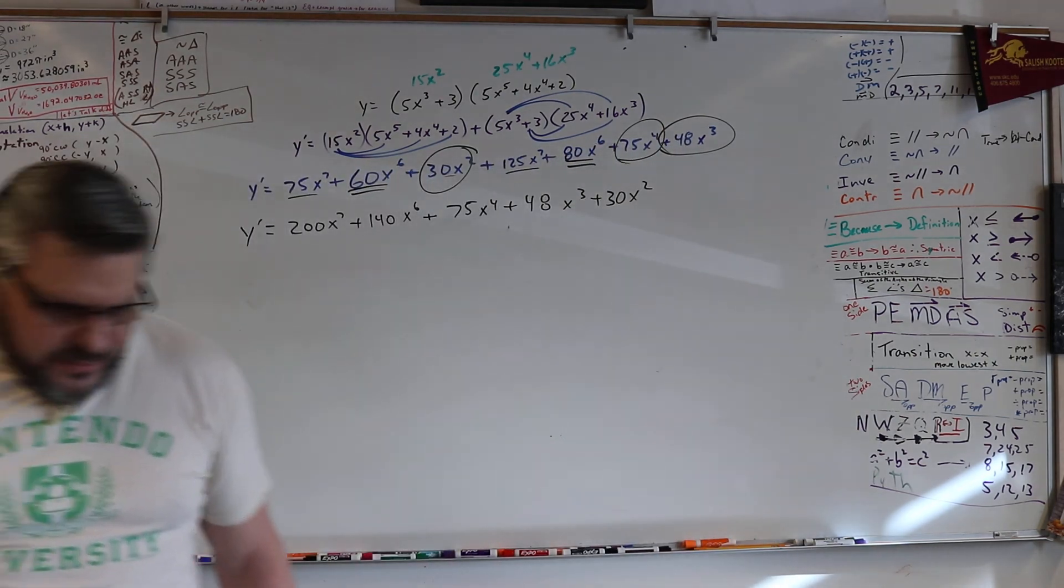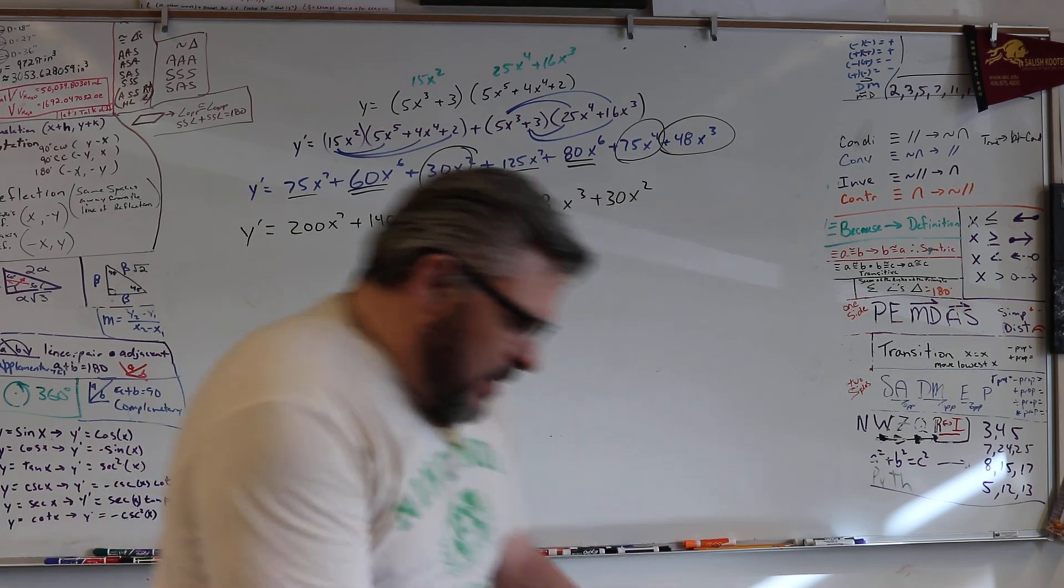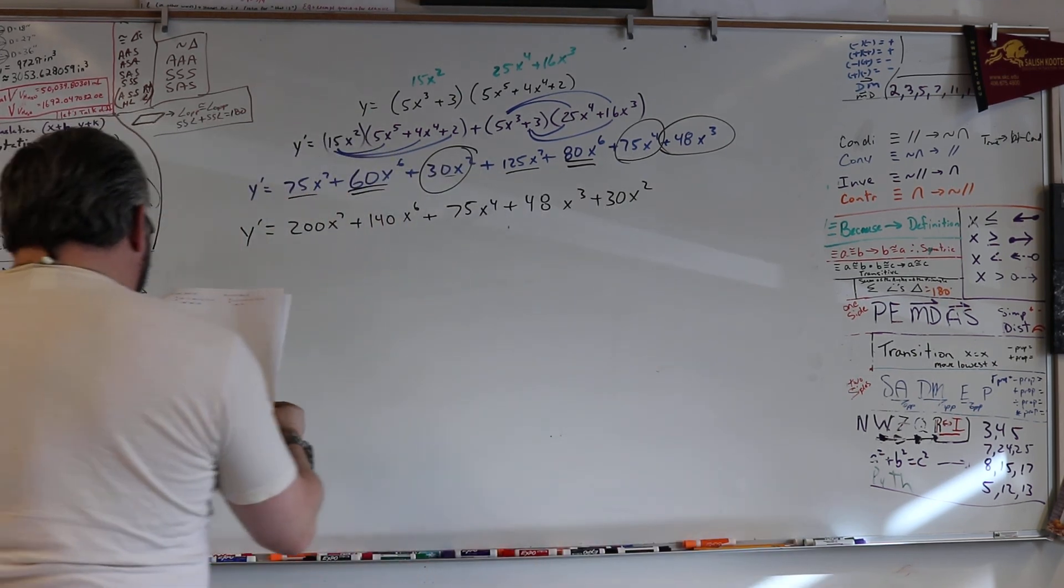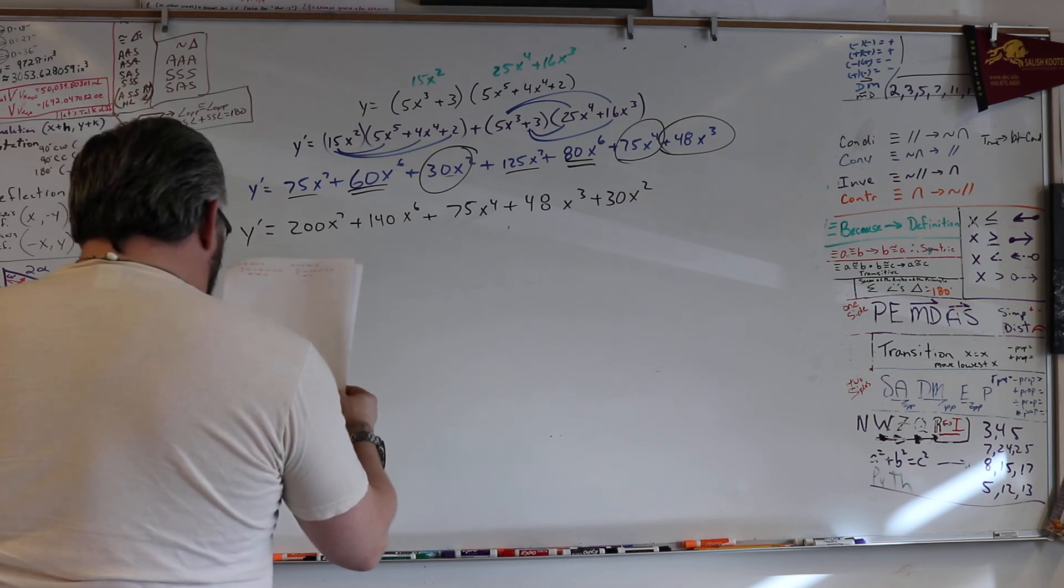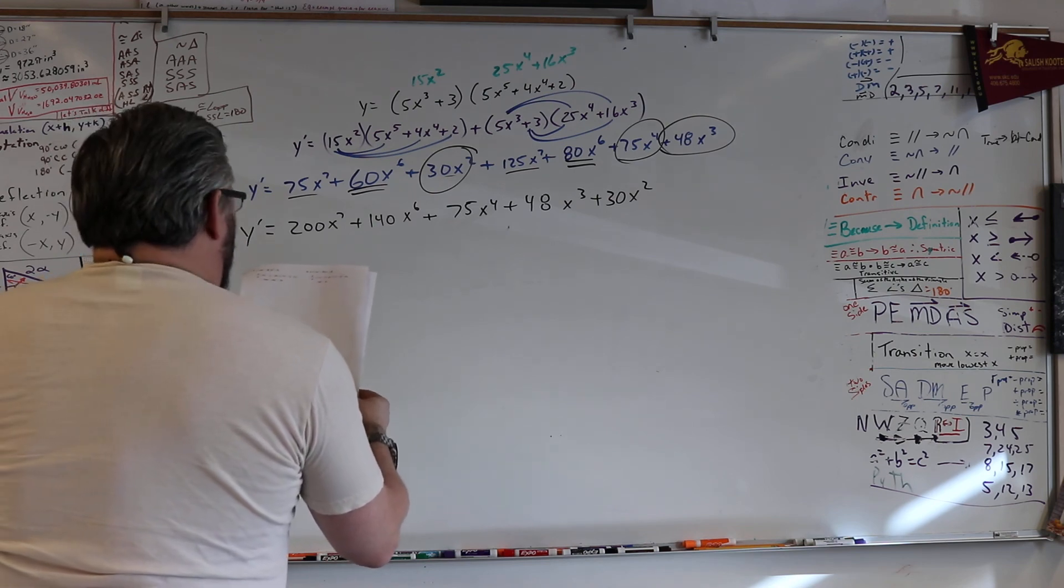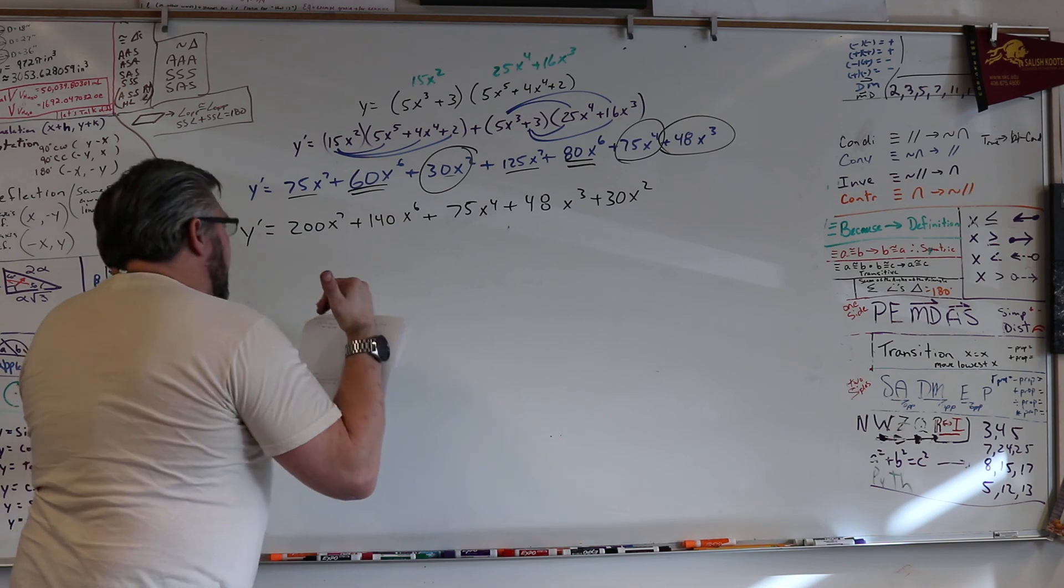Let's double check with our 200 x to the seventh. Plus 140 x to the fourth. 75 x to the fourth. 48 x cubed. And 30.